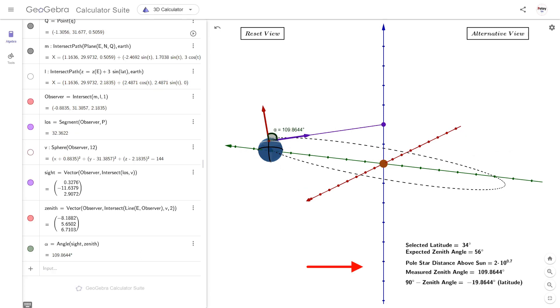So let me draw your attention to this text over here. This is the latitude we selected and this is the expected zenith angle to a far away Polaris. This is the distance from the sun to the purple point that is tied to the z-axis. This is the measured angle between the two vectors. And this last line should be the observer's altitude to Polaris, which should also match the latitude.